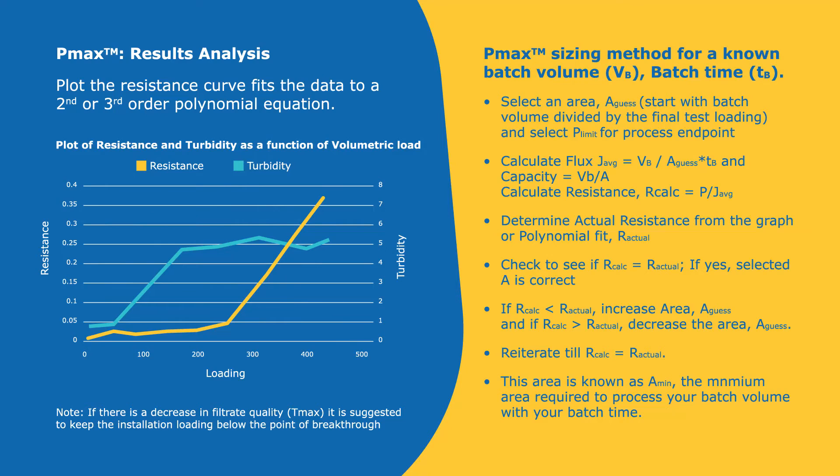Once you have your table of data, which would be time, volume, and turbidity, you're going to use your time and volume data. You're going to plot the resistance curve. So you're going to have resistance on the y-axis and a loading or capacity number on the x-axis. Resistance is in terms of pressure over flux, which is liters per meter squared per hour. And the loading or capacity on the x-axis is liters per meter squared.